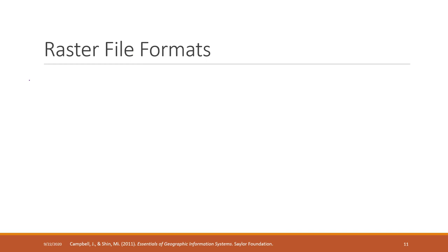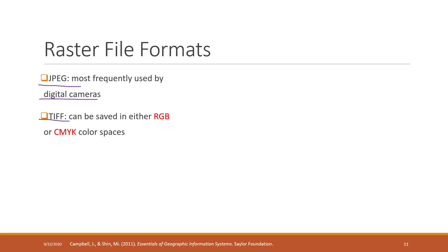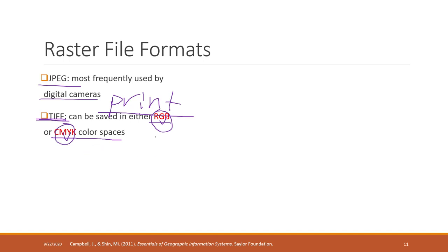Now let's look at raster file formats. The most common ones are JPEG, frequently used by cell phones and digital cameras, and TIFF, which is commonly used for printing. TIFF can be saved in either RGB color spaces or CMYK color spaces — that is, additive or subtractive color spaces. We will talk about those two color theories later this semester.